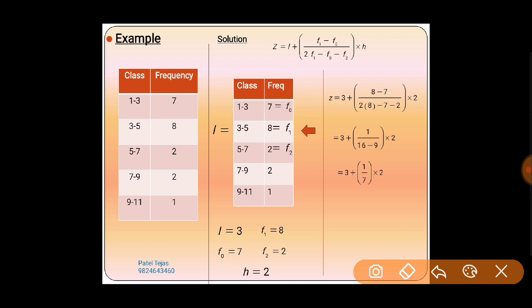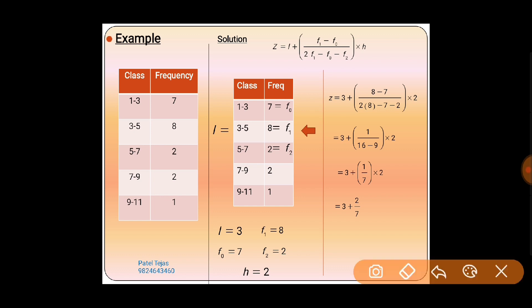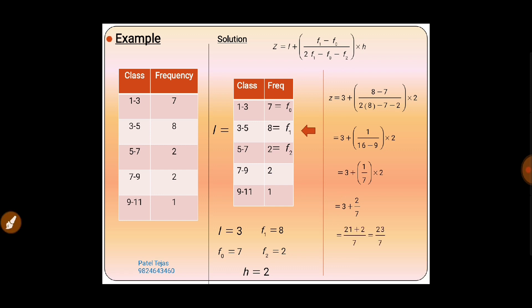We can solve 3 + 2/7 by taking LCM. Taking 7 as LCM: (7×3 + 2) / 7 = (21 + 2) / 7 = 23/7. Dividing 23 by 7 gives us the mode: Z = 3.286.